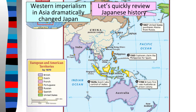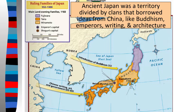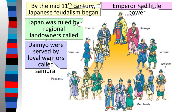Western imperialism in Japan is going to really dramatically change Japan. To review a little bit of the history: Japan was divided by different clans, wasn't very unified, and it borrowed a lot of ideas from China — like Buddhism, emperors, different styles of writing, and architecture. We had that feudal system where you had the emperor at the top but they didn't really have any power — very symbolic, kind of like the Queen of England — and then the Shogun is the one who really had all the power. Below that you had the daimyo, who were pretty much like lords, you had the samurai, very similar to a knight, and then at the bottom peasants, artisans, and merchants.